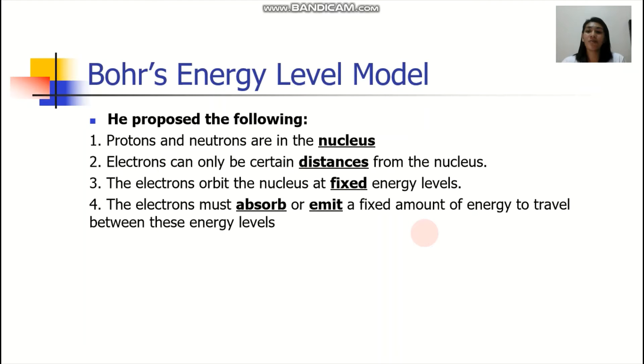Bohr actually proposed the following. First, he proposed that the protons and neutrons are in the nucleus. And that electrons can only be certain distances from the nucleus. He also proposed that the electrons orbit the nucleus at fixed energy levels. And that the electrons must absorb or emit a fixed amount of energy to travel between these energy levels.